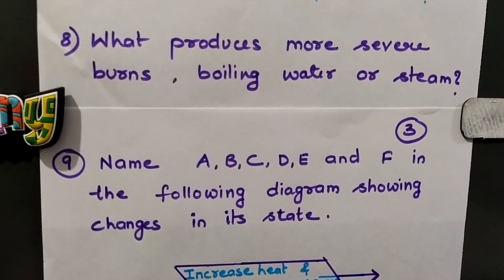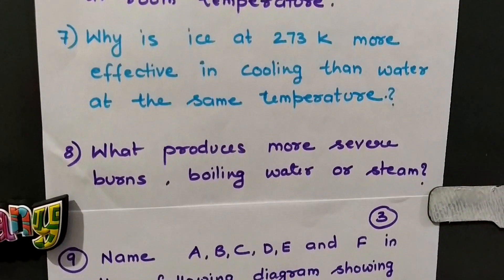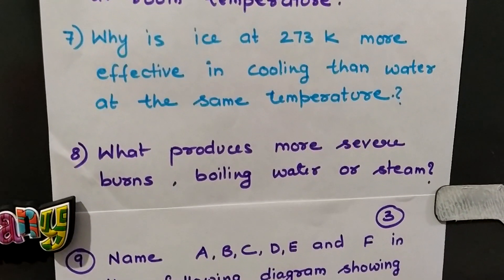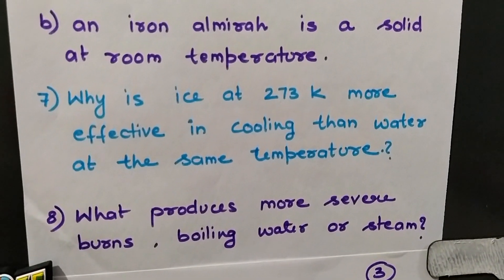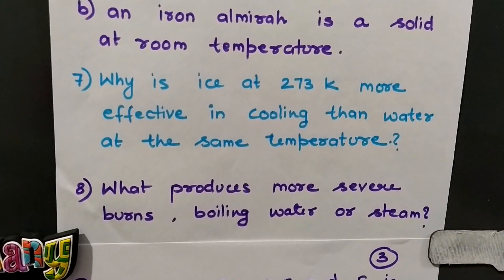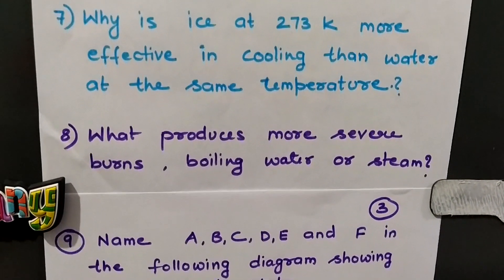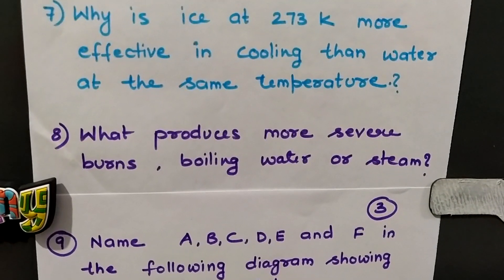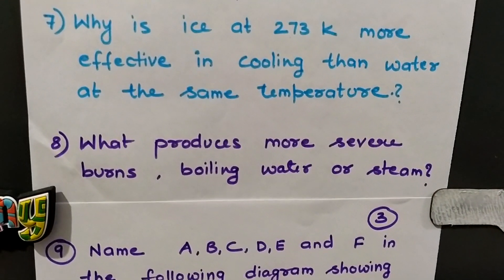Question 7: Ice at 273 K causes more cooling than water at the same temperature — explain. Ice in its solid state has extra energy in the form of latent heat of fusion compared to water. When ice starts melting, it absorbs energy from the surroundings to overcome this latent heat, causing the temperature of the surroundings to drop — that is, cooling is caused. Since water is already in liquid state, it hardly absorbs any energy from the surroundings, so ice at 273 K causes more cooling than water at the same temperature.